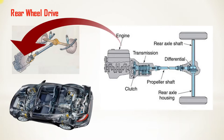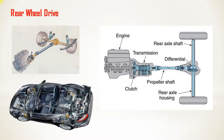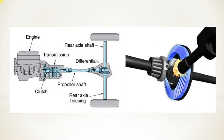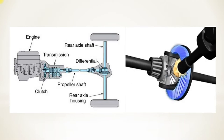In the case of front engine rear wheel drive, the engine is fitted at the front side of the car including the clutch and gearbox, while drive to the rear axle is given with the help of a propeller shaft. This chassis layout is one of the oldest and still remains popular for heavy commercial vehicles.